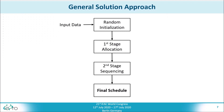After this stage is completed, the allocation is fixed and the schedule is refined in the second stage, which performs a sequencing of the orders on their allocated lines. After the second stage is completed, the final schedule is obtained.